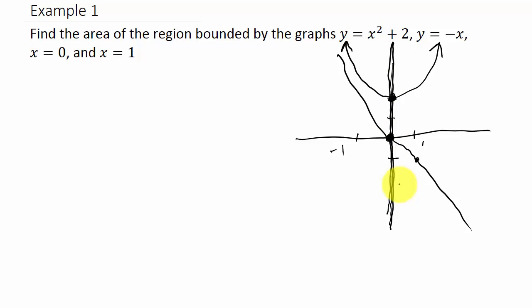And then I have the graph x equals 1, and that's a vertical line going through where x equals 1. So the area that I'm looking for is this one right here - that's the area I'm looking for.